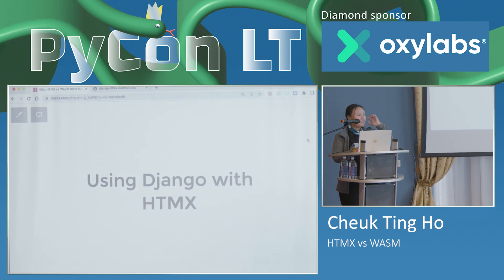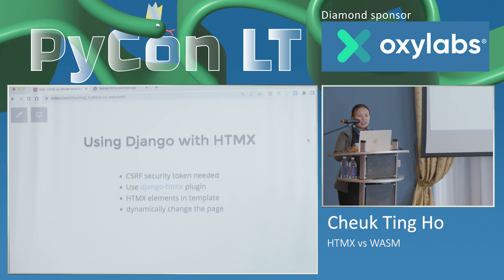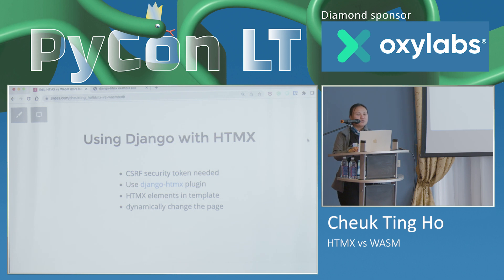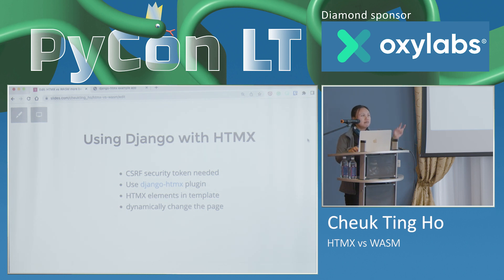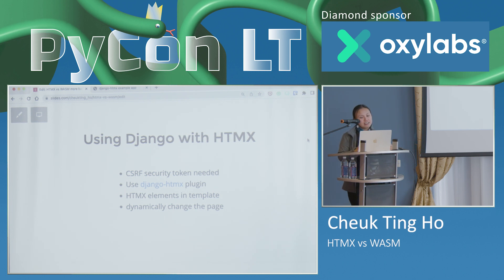Here's the bit I want to demonstrate: using htmx with Django. Some background: Django requires a CSRF security token, so you can't just use htmx with Django without getting errors. That's why there's a Django-htmx plugin — it makes it easier to use htmx with Django. You can add the htmx elements in the template when you set up your Django app. It's fairly straightforward, and then it will dynamically change the page — no JavaScript needed.